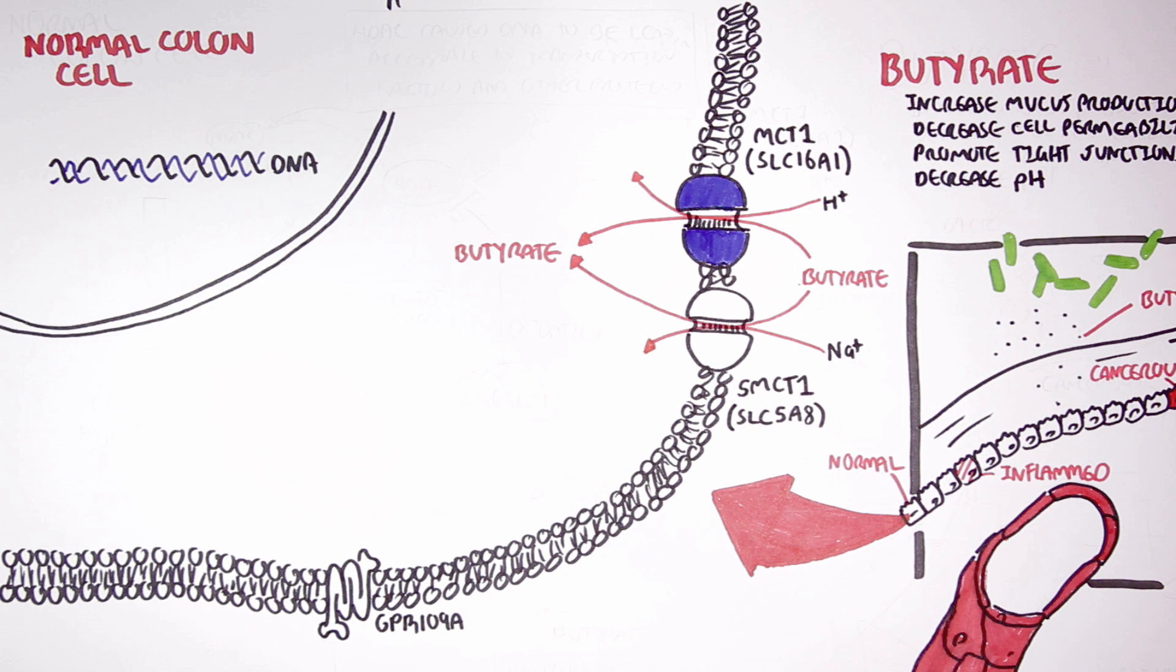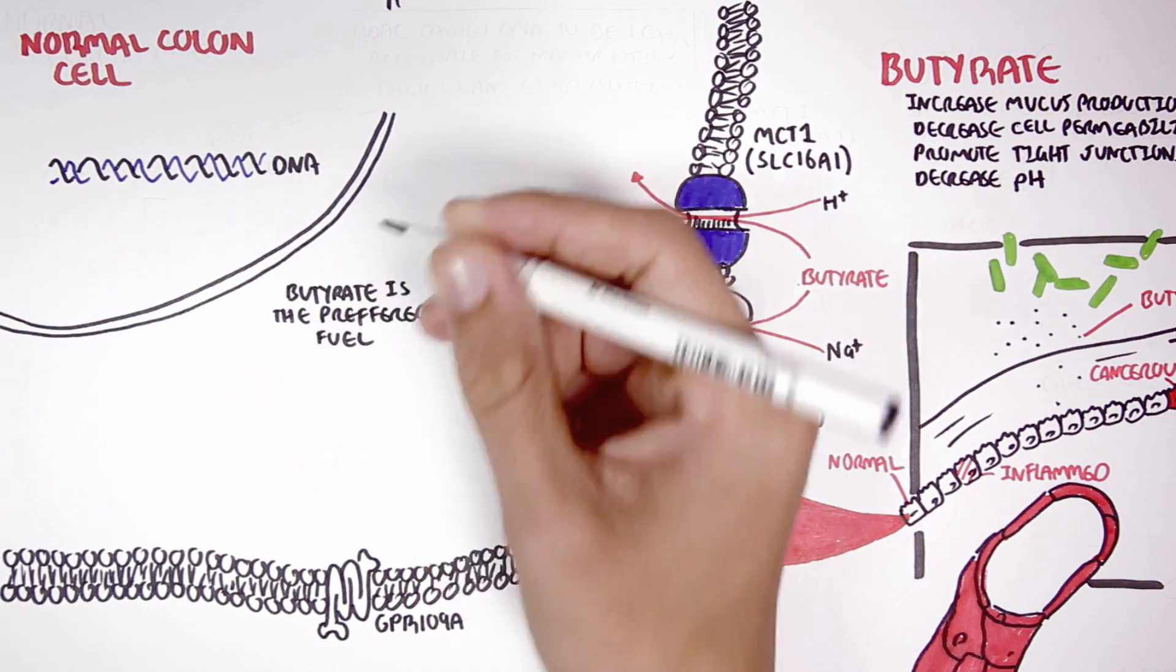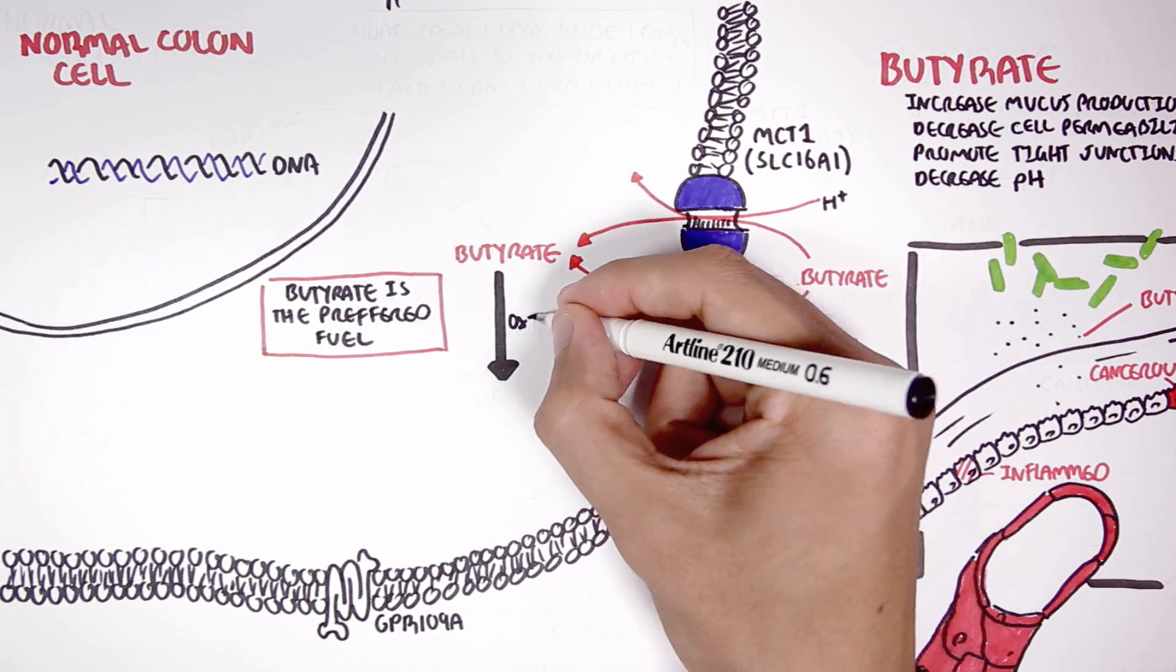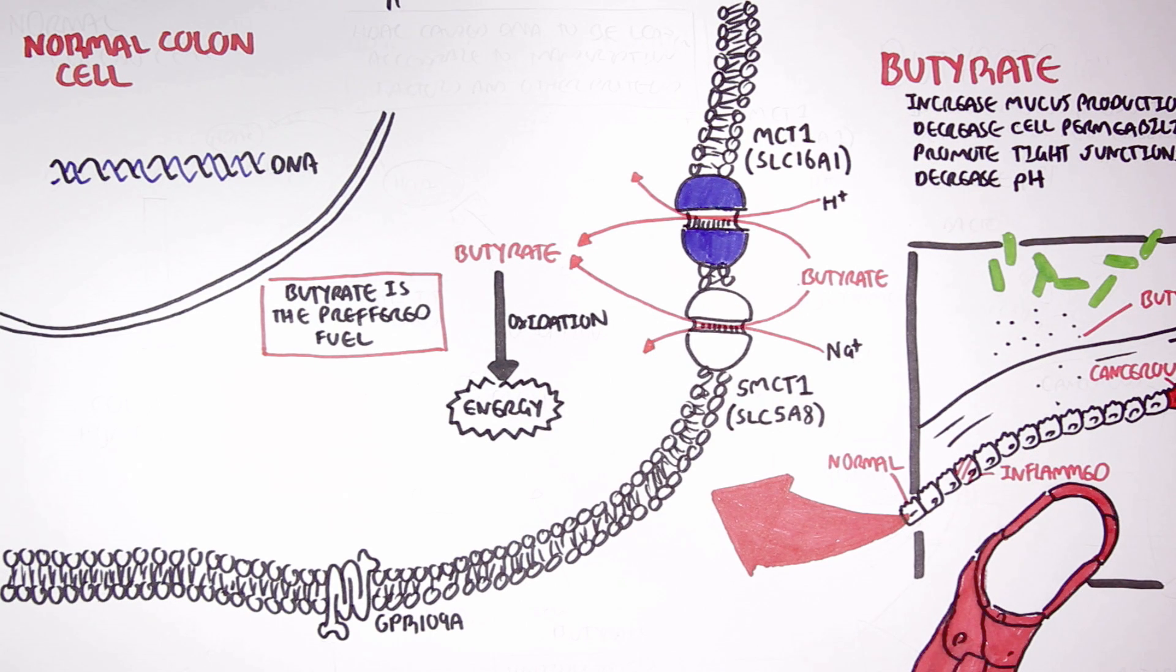Now butyrate is the preferred fuel in colon cells. Butyrate is used preferentially over glucose. Butyrate is oxidized in the colon cells to produce energy, maintaining colon cell integrity and health.